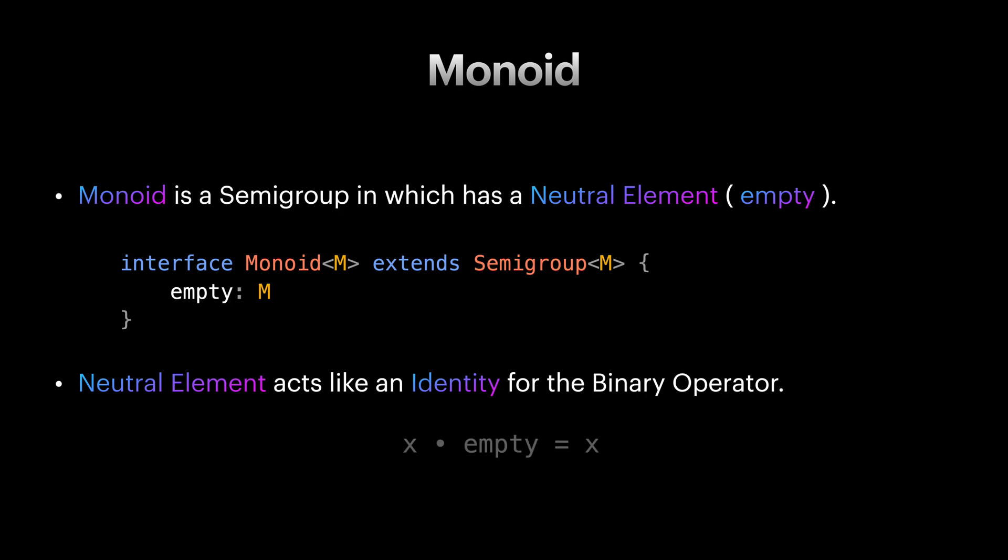More specifically, if we concatenate any element with the empty element from the set, or concatenate empty element with any element of the set, we always receive that element. It's like nothing happens. This gives us an initial value for when we don't have any values yet.